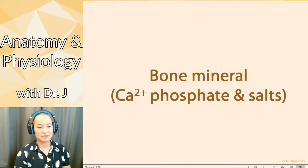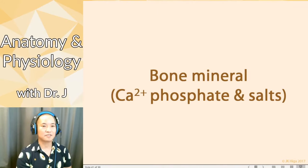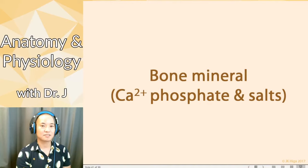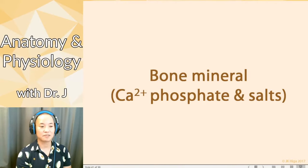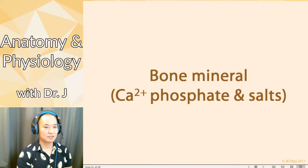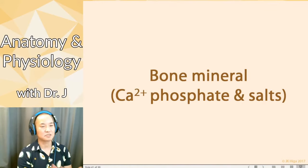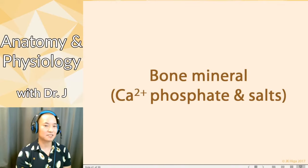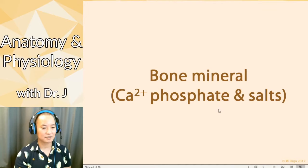Bone mineral actually starts off as something called osteoid. If you take fully developed bone and break it down into what it's made of, the ground substance of bone matrix is bone mineral. One major substance you find is calcium phosphate, plus other calcium salts. Calcium and phosphate are two big ions found in bone mineral.